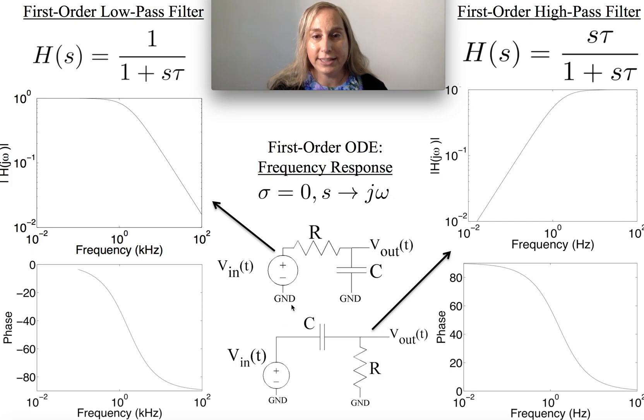And in all of these cases, you end up getting transfer functions for the low-passes of 1 over 1 plus s tau. And for high-passes, it's s tau over 1 plus s tau. So very similar. Basically, one is just an extra derivative, which wasn't surprising given that in these formulations, we always had an extra derivative on the input.